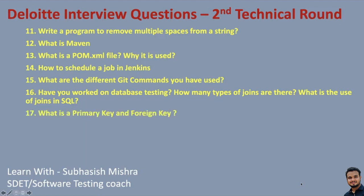What is a primary key and foreign key? Very basic SQL questions — what is the difference between primary key and foreign key? What is normalization? Again, very basic SQL. Normalization represents the way of organizing structured data in the database efficiently. It includes the creation of tables, establishing relationships between them, and defining rules for those relationships. Understand these concepts.